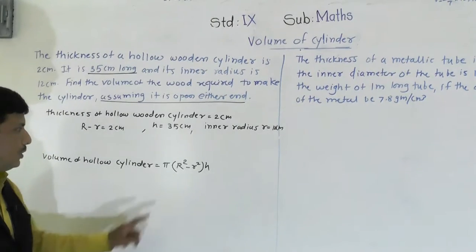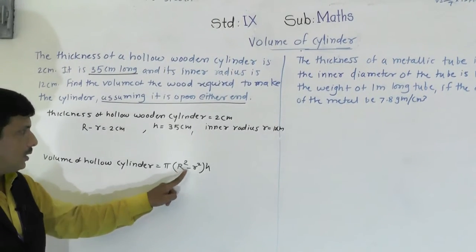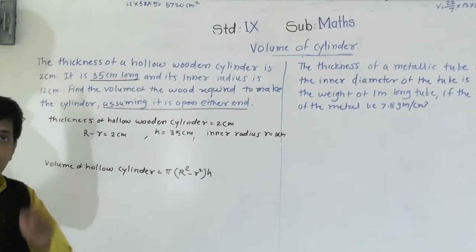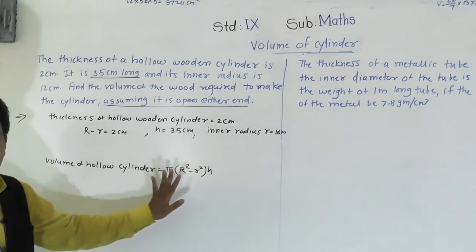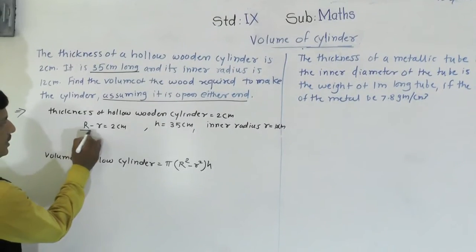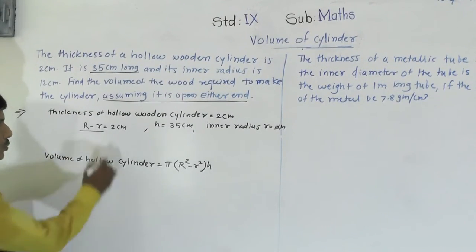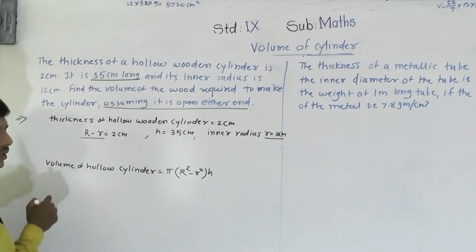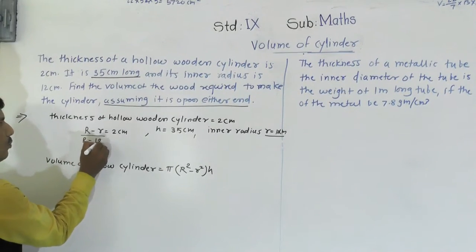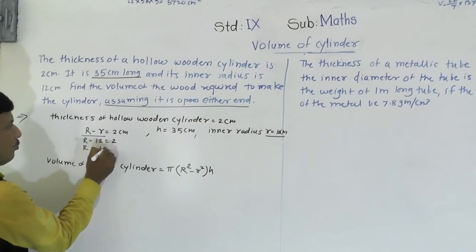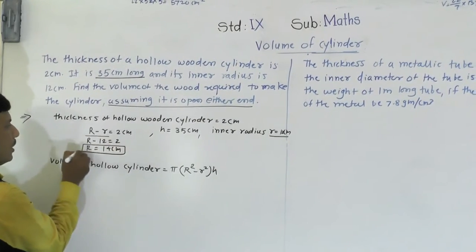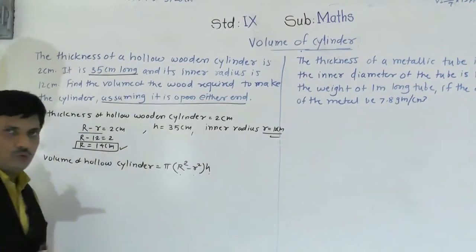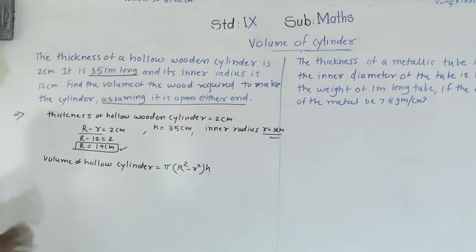Pi we can put as 22/7. Small r and height are given, but capital R is not given, so we need to find it. From the thickness formula: R minus r = 2. Since inner radius r = 12, we get R - 12 = 2, so R = 14 cm. Now we have capital R, small r, and height.